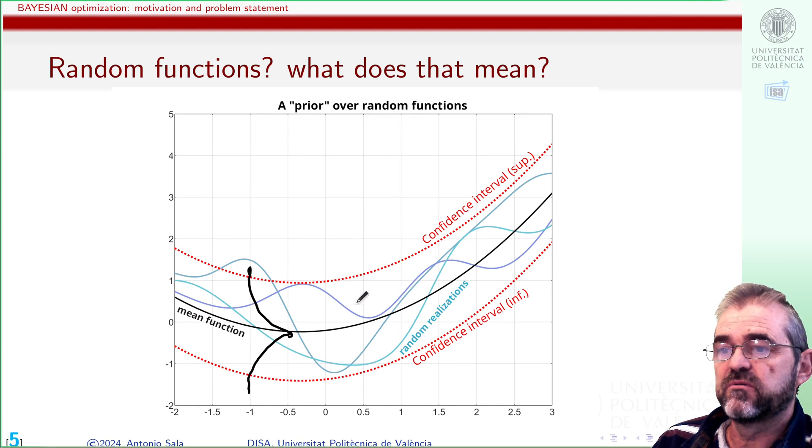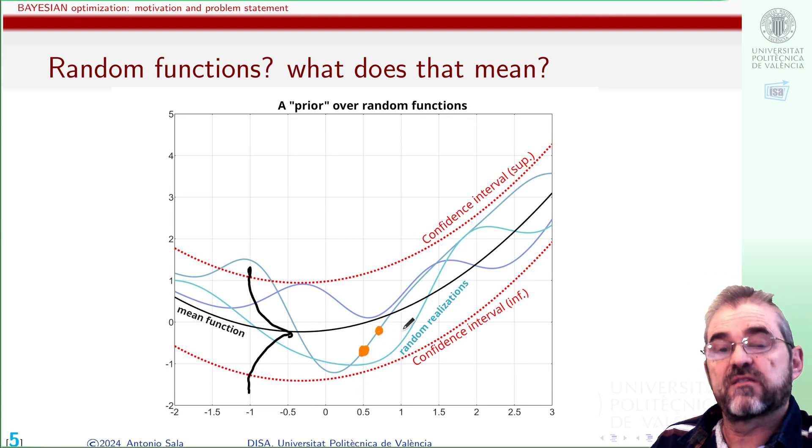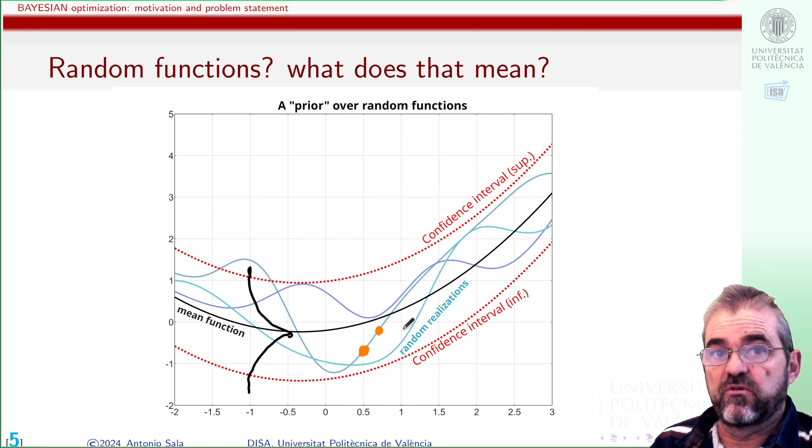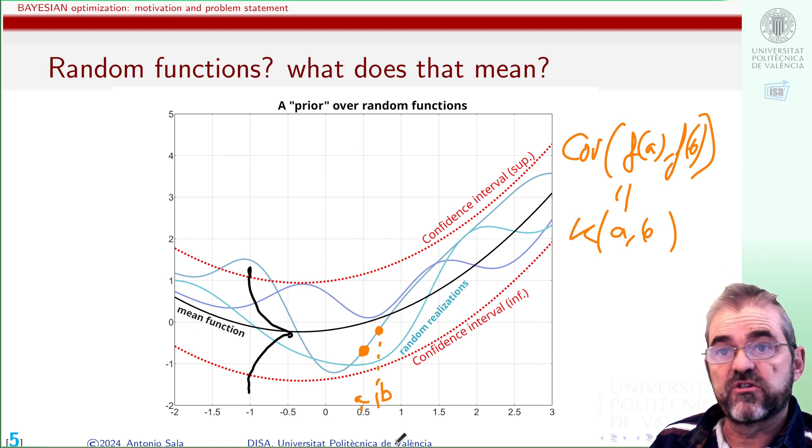Indeed we need to impose that if I take a value of my function at this point and at close points then they cannot be independent random variables because the statistical correlation must tend to 1 as points get close together. So the correlation is related to covariance and then the way to solve this is defining suitable covariance kernels so that the covariance between the functions of two points a and b will be defined by some kernel which depends on the axis a and b and most of the times in applications it depends just on the distance between a and b.